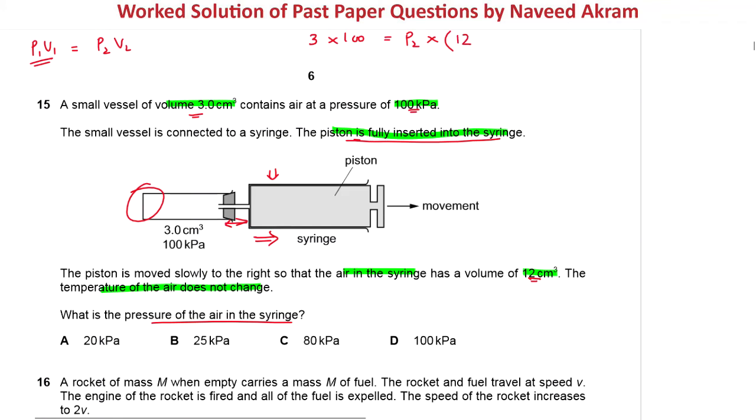If we solve this, we get P2 equals 300 divided by 15, which is 20 kilopascal. Option A.